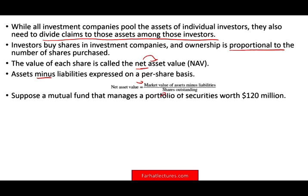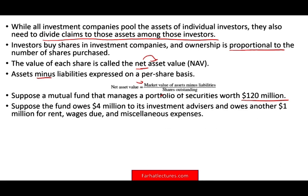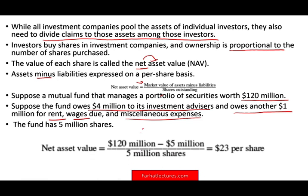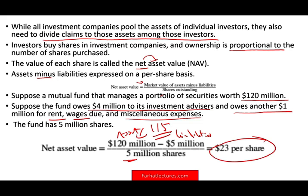The best way to illustrate this is with an example. Suppose a mutual fund manages a portfolio of securities worth $120 million. The fund owes $4 million to its investment advisors and $1 million for rent, wages, and miscellaneous expenses. The fund has 5 million shares outstanding. Plugging into the formula: $120 million in assets minus $5 million in liabilities equals $115 million, divided by 5 million shares. The net asset value is $23 per share.